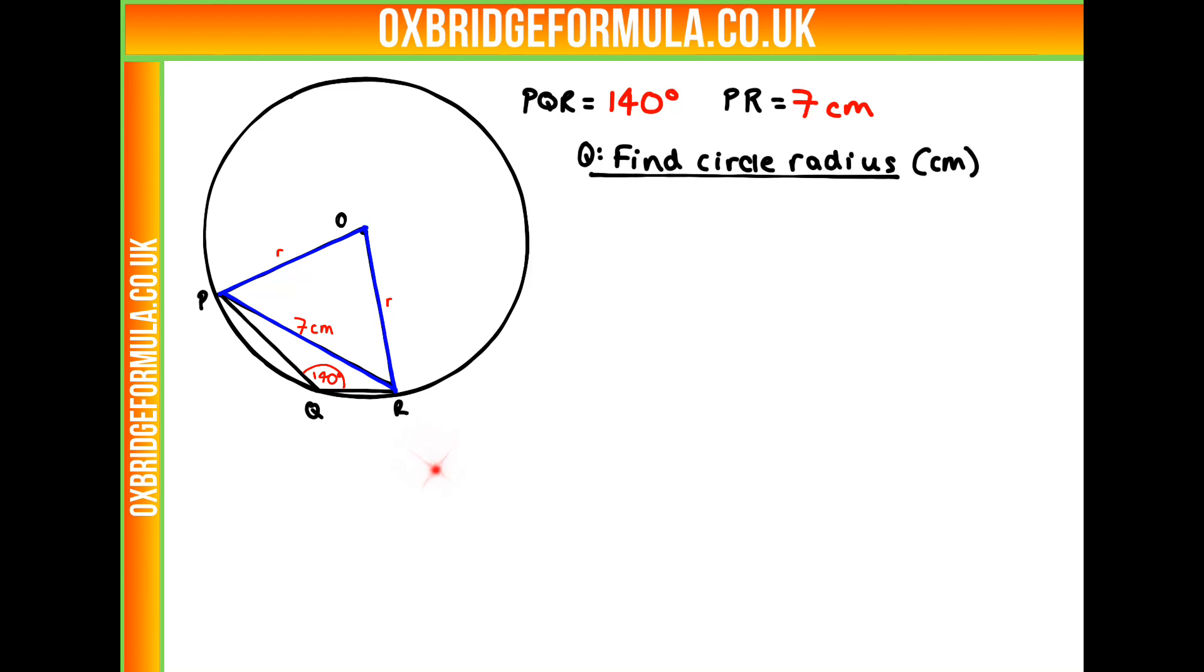We can use our circle theorems. We have an angle here at the circumference, and what can we take from that? Well, we can use the theorem that the angle at the circumference is half of that at the centre. So if we times our angle here by 2, we get 280 degrees. And that corresponds to our angle at the centre here.